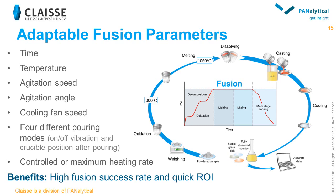It is also possible to select one of four pouring modes most appropriate for the sample. You can add or reduce vibration during the pouring and even choose the crucible position at the end of the fusion cycle. With two different heating modes, the user can choose the heating rate for a given fusion program — the heat can either be set at maximum speed or controlled. All adjustable parameters also have a safety limit for safe operation. These features ensure maximum versatility in fusion program management, leading to a high fusion success rate and a quick return on investment.